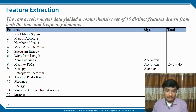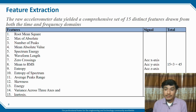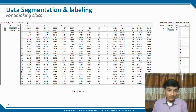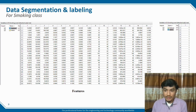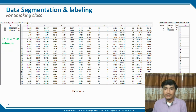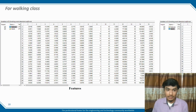For data segmentation and labeling, after extracting features, the feature data is input into an Excel sheet. We label the smoking class as level 1, the walking class as level 2, the upstairs class as level 3, and the downstairs class as level 4.